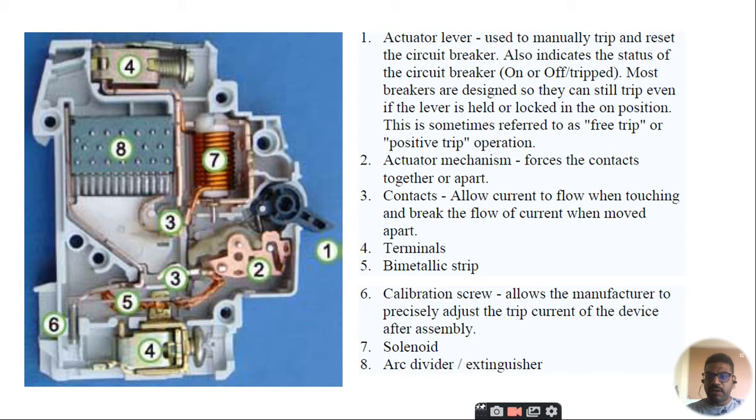It is black color or dark color that we turn on if the fault is removed; otherwise it will not turn on. This is sometimes referred as free trip or positive trip operation. We have a video where you can observe the principles of the MCB.